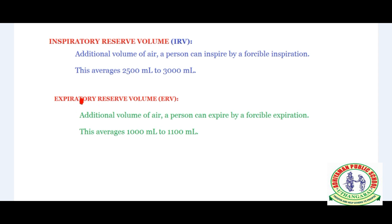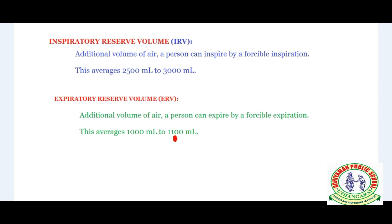Next is expiratory reserve volume (ERV). It is the additional volume of air a person can expire by a forcible expiration. Here you can see: IRV is the volume a person can inspire by a forcible inspiration, while ERV is the volume a person can expire by a forcible expiration. This averages 1000 ml to 1100 ml.